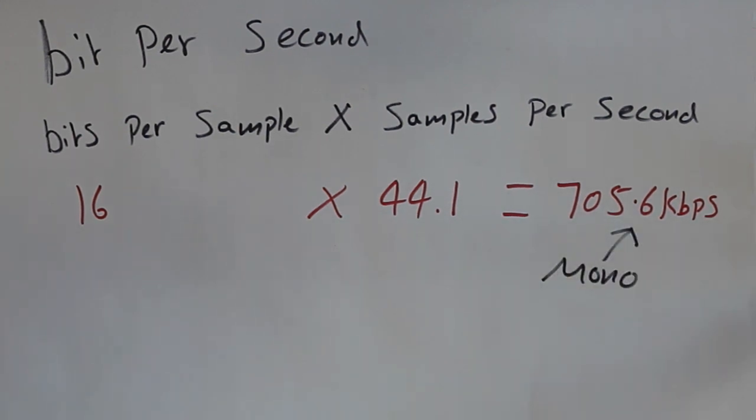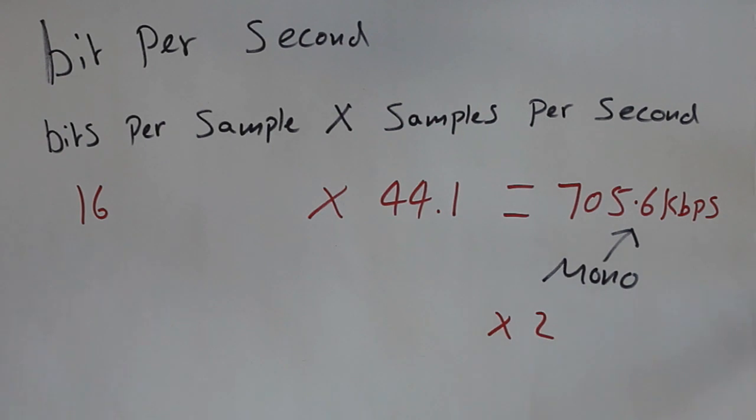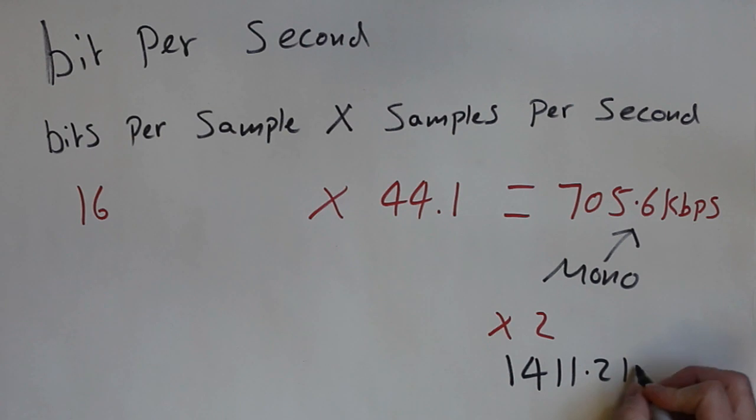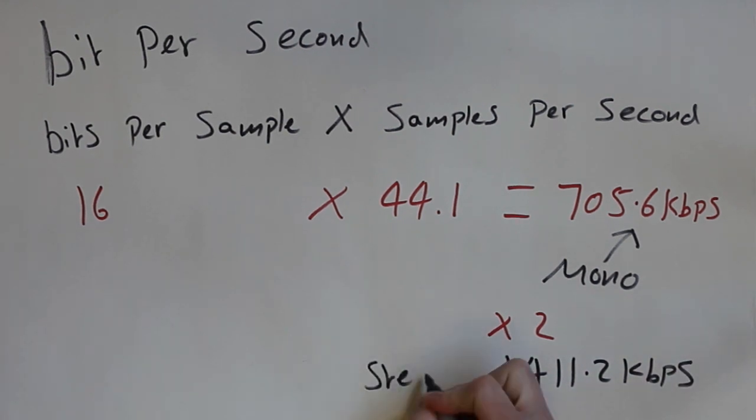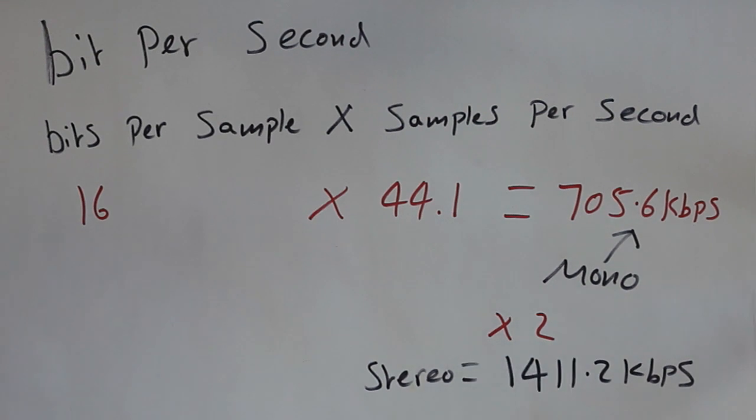Also remember that this is per audio stream, so 705.6 kilobits per second is the bitrate for a mono 16 bit 44.1kHz PCM file. If it's a stereo file, you need to double the value because it has two audio streams. So this makes 16 bit 44.1kHz stereo PCM audio 1411.2kbps.